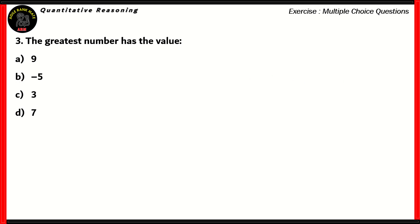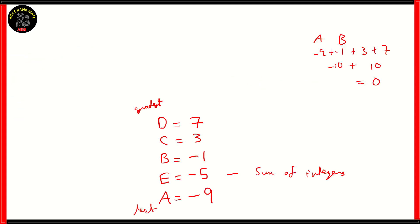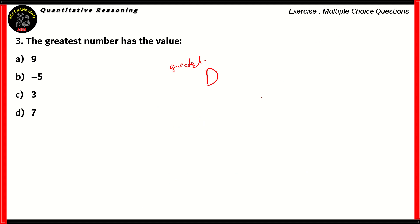Question number 3: the greatest number has the value. According to the third statement, D is the greatest value. Looking at our value sheet, the greatest number equals 7. Therefore, D equals 7, meaning option D — 7 — is the right option. Option B, minus 5, is too low; option A, 9, is incorrect; and option C, 3, is also incorrect. The right answer is option D, 7.